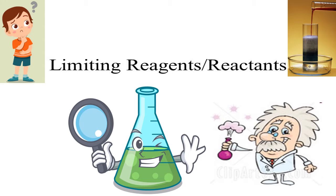In chemistry also, whenever two elements or two compounds are reacting, if both reactants are present as per the balanced chemical equation then there is no problem. But by chance, if out of two or more reactants one is in less amount — less amount than required by the balanced chemical equation — that is called the limiting reagent or limiting reactant. It is used up completely, and the formation of product depends upon the amount of the limiting reagent.